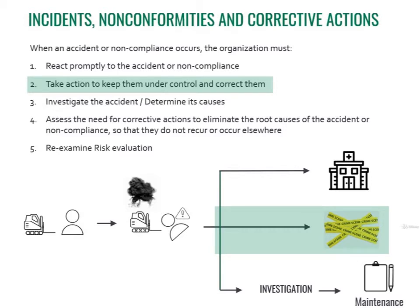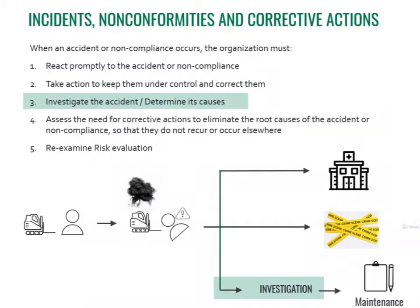We want to go deeper, understand the real problem, and most importantly prevent it from happening again. That's why Step 3 is investigating the accident and determining the cause. Reasons to investigate a workplace incident include: finding out the cause and preventing similar incidents in the future, fulfilling legal requirements, determining the cost of an incident, determining compliance with applicable regulations such as occupational health and safety and criminal law, and processing workers' compensation claims.